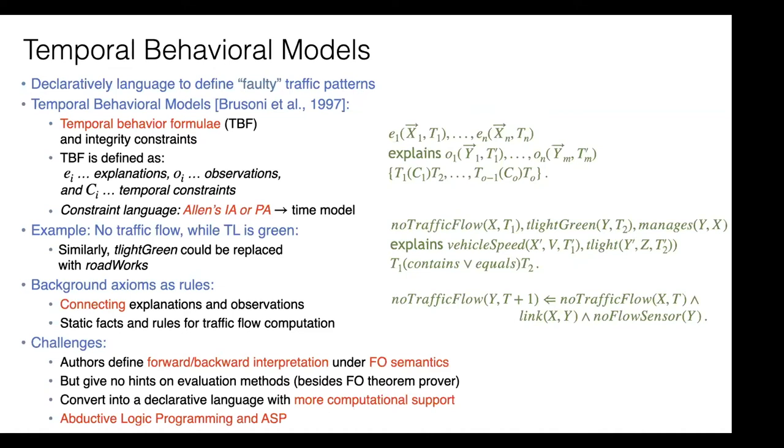The authors of temporal behavior models, Bessoni et al., gave a way to interpret these formulas. They suggested forward-backward interpretation using first order semantics, but didn't give much hint how to do evaluation on them. We want more efficient computational support while still having a declarative language. Our idea is moving towards abductive logic programming and ASP to express temporal behavior models in combination with background axioms.